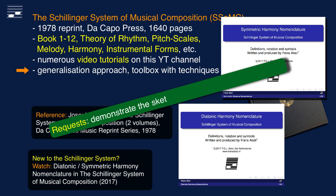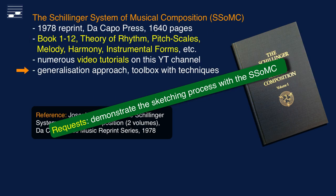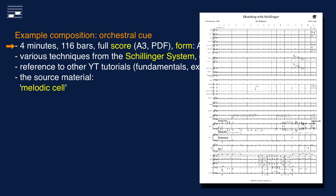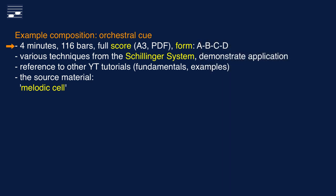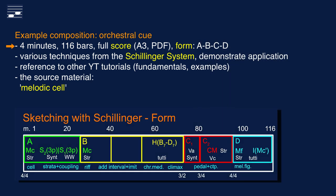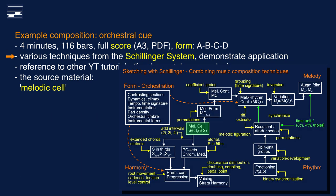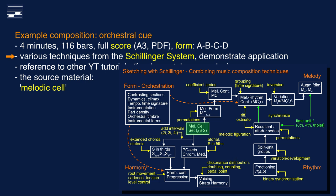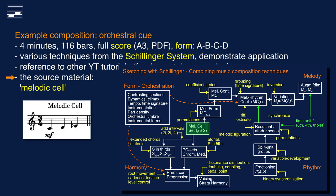In response to these tutorials there have been requests for a more detailed demonstration of the sketching process, as the online content frequently moves from the fundamentals to the final version, skipping intermediate steps. That's what I'll be doing here, with this series around a 4-minute, 116-bar example orchestral composition with A-B-C-D form. You'll see the application of many Schillinger system techniques, where in this episode the focus is on a specific domain: either melody, rhythm, harmony or orchestration.